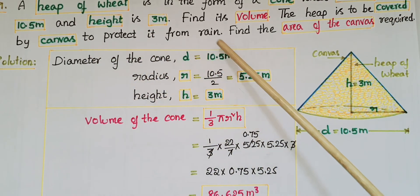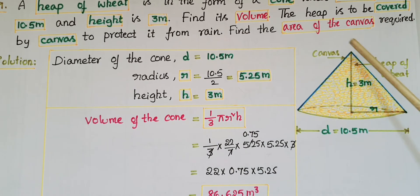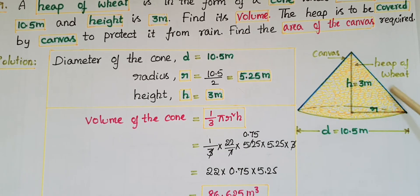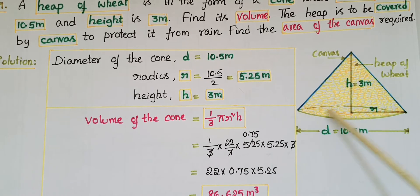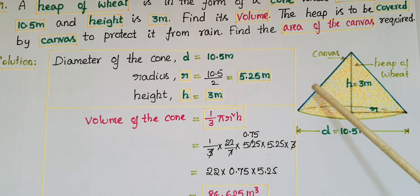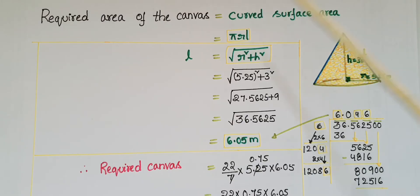Next, the heap is to be covered by canvas to protect it from rain. Find the area of canvas required. Since the canvas excludes the base area, we need to find the curved surface area of the cone.